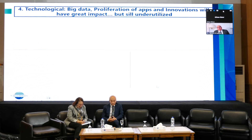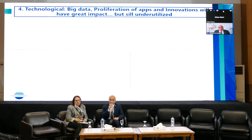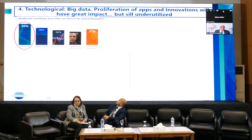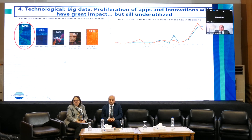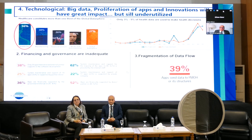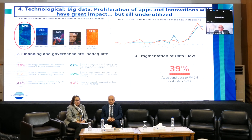The fourth mega trend is technological. Big data, proliferation of applications and innovations will have great impact; however, they are still underutilized. Healthcare constitutes more than one-third of the global data sphere — 36% of all data produced globally. Yet only 3% to 5% of health data are used to make health decisions. Challenges include inadequate financing and governance, and fragmented data flow: only 39% of applications send data to central ministries of health, meaning about 60% of data does not converge.